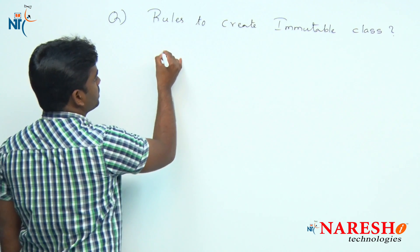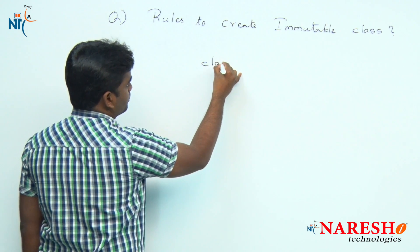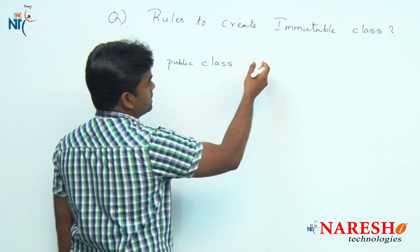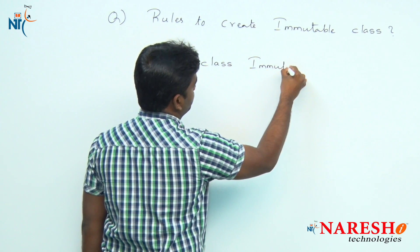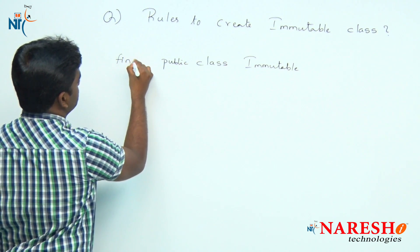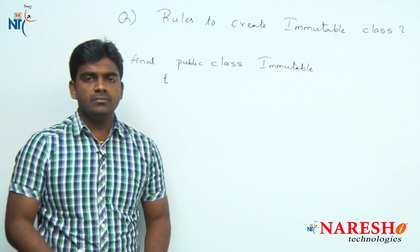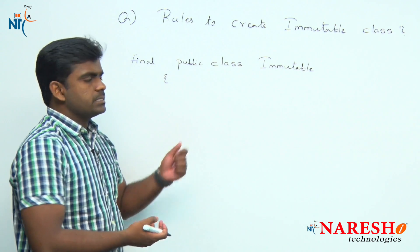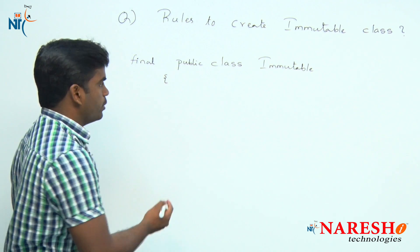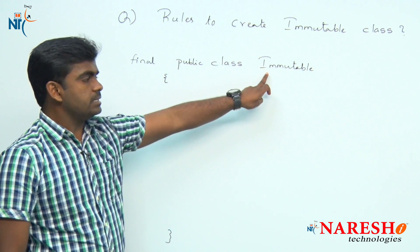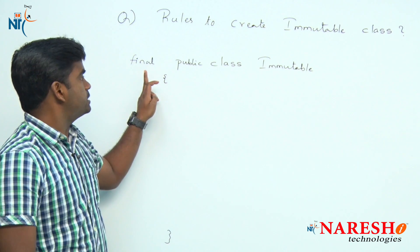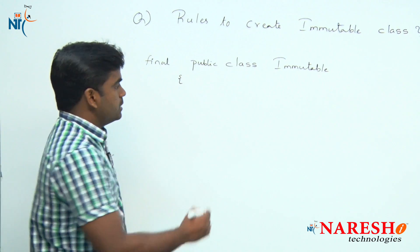The first rule: define the class as public and final. It is a public class, available to all to instantiate. You can give any class name — for example, 'ImmutableClass'. Make that class final, because final class means extensions are not allowed. If you allow extensions, methods can be overridden and the state of the object can be modified, so we avoid that.